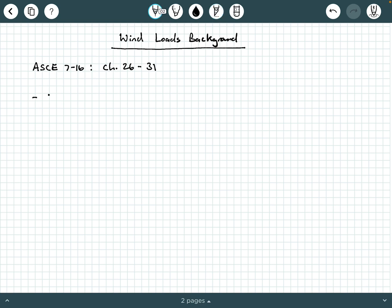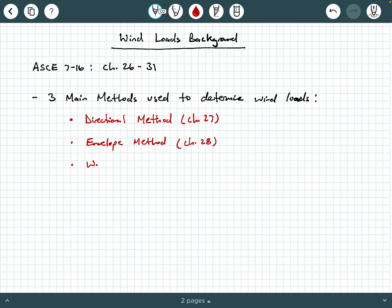There are three main methods used to determine wind loads acting on a structure. One method is called the directional method from ASCE 7-16 chapter 27. Another method is called the envelope method or envelope procedure, found in chapter 28. And then we also have the wind tunnel method or wind tunnel procedure, summarized in chapter 31 of ASCE 7-16.